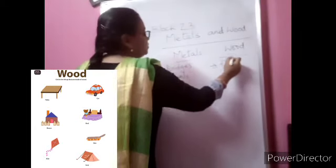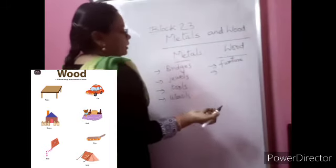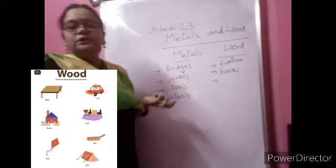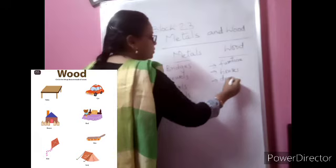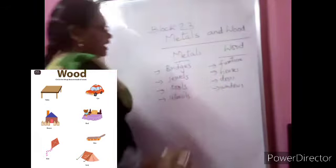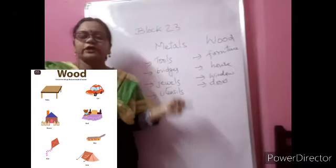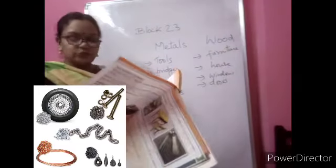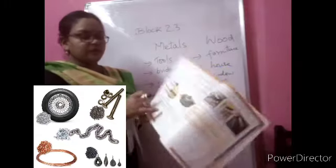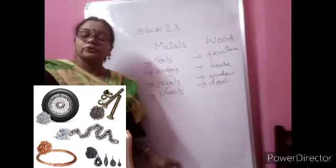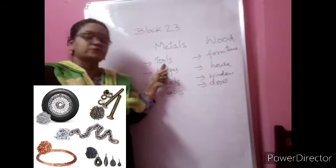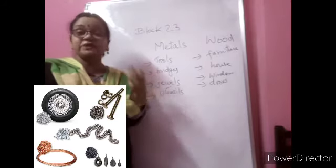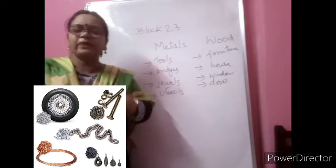What about wood? Wood is used for making furniture. Wood is used to make houses — wooden houses keep people warm. Wood is used for making tables, chairs, doors, and windows. You can add more from reading your textbook. Metals are used for tools and bridges because they are hard, strong, and can be beaten into shape. Jewels are made of metal because they are shiny and can be made into thin sheets with beautiful patterns.